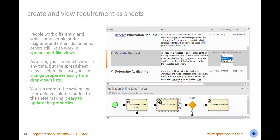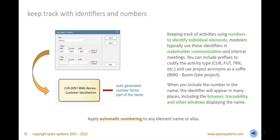Enjoy the productivity of working in this familiar business paradigm and switch to other views such as list, diagram, and Gantt views when needed. Keep track of activities, gateways, and other elements with identifiers and numbers automatically applied when creating a new element. Set your own starting number and specify prefixes and suffixes for the numbering system. The numbers will be helpful to readily identify activities and gateways in stakeholder workshops, team meetings, and conversations.